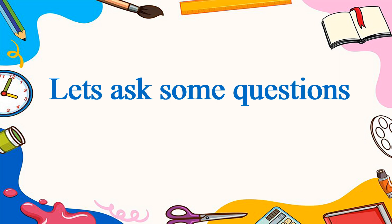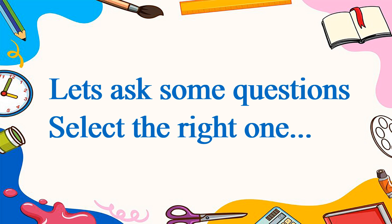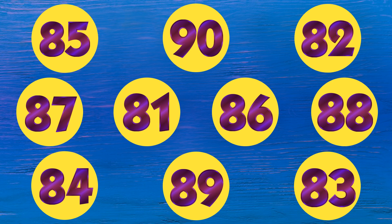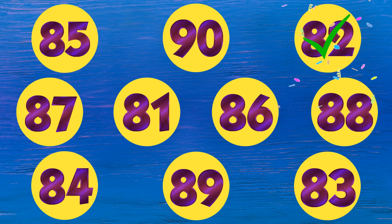Let's ask some questions. Select the right one. Which one is 82? 10, 9, 8, 7, 6, 5, 4, 3, 2, 1, 0. This is the right one.